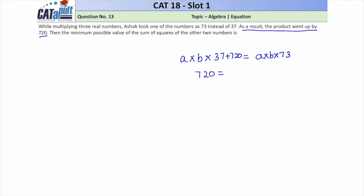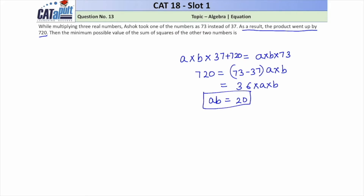Solving further: 720 = (73 − 37) × a × b = 36 × a × b, which gives us ab = 20. Now that we have ab = 20, we need to minimize the sum of squares of the other two numbers, that is, minimize a² + b².